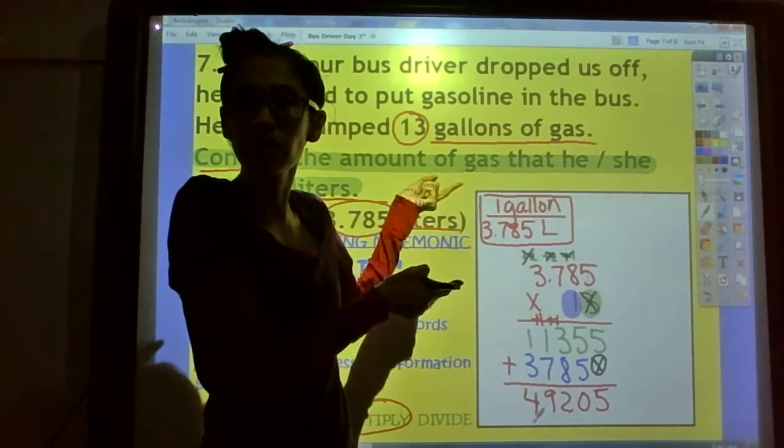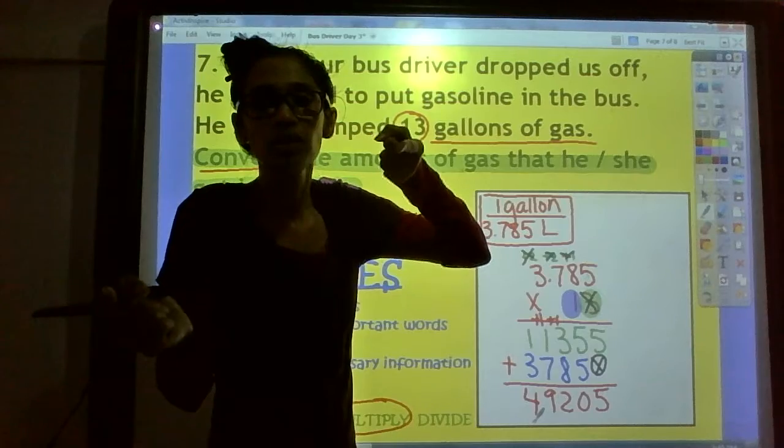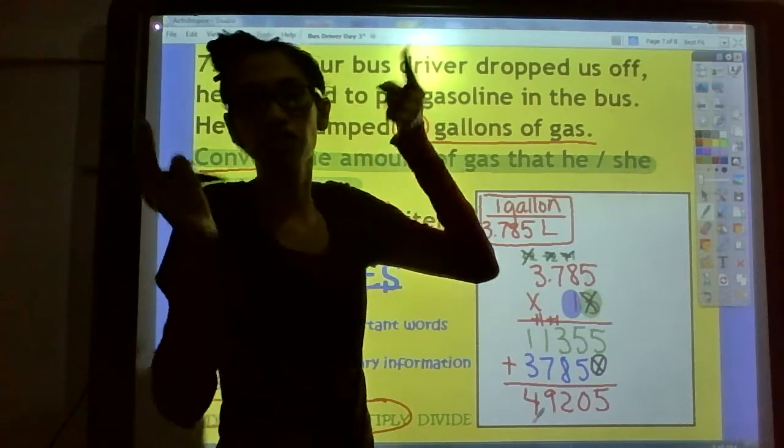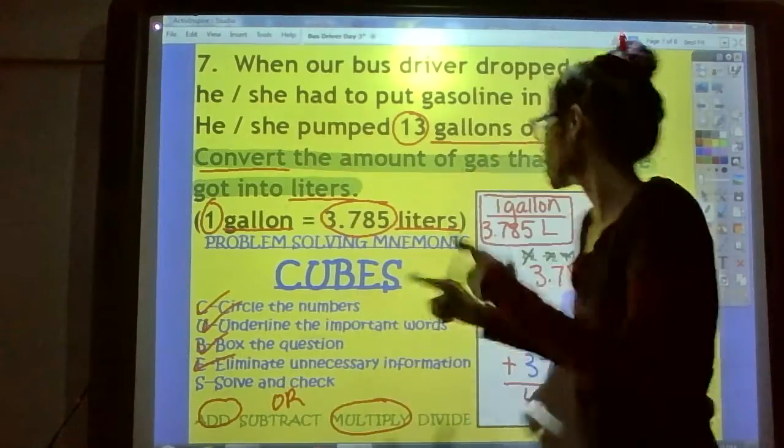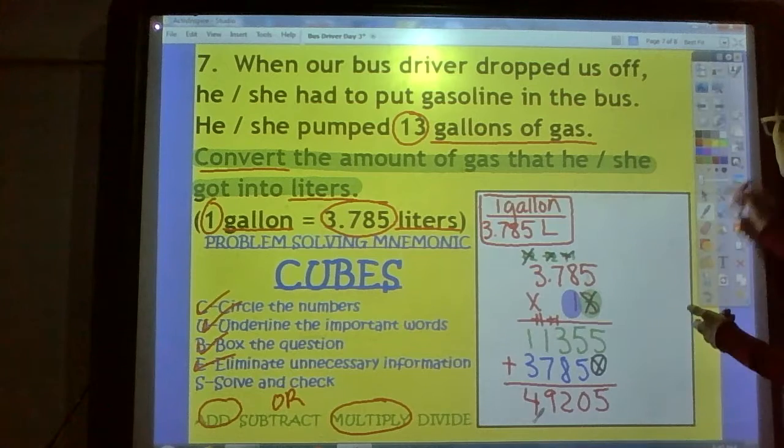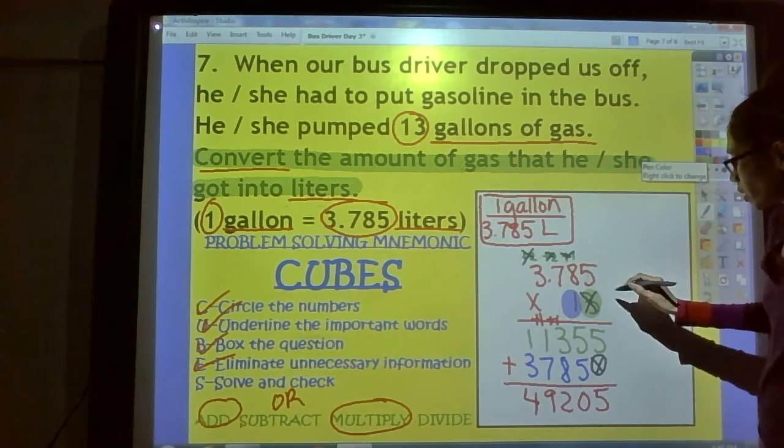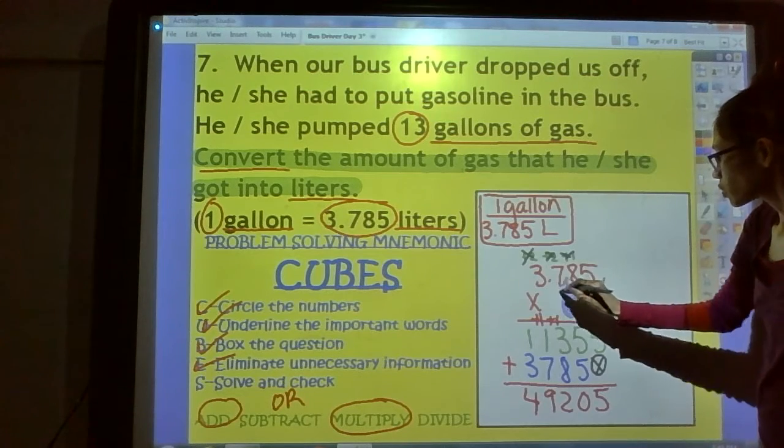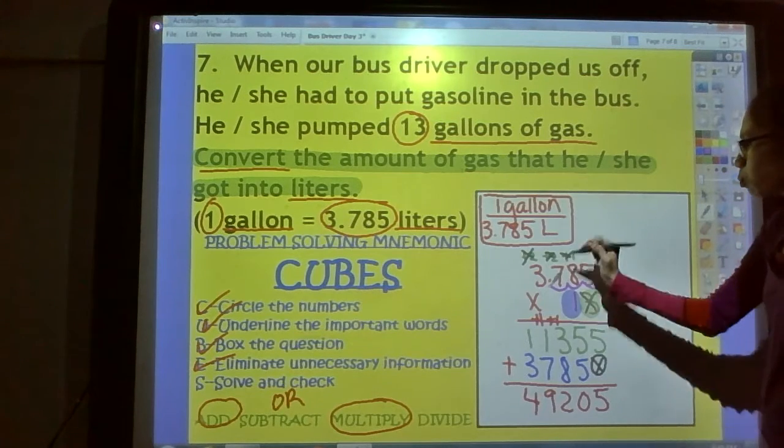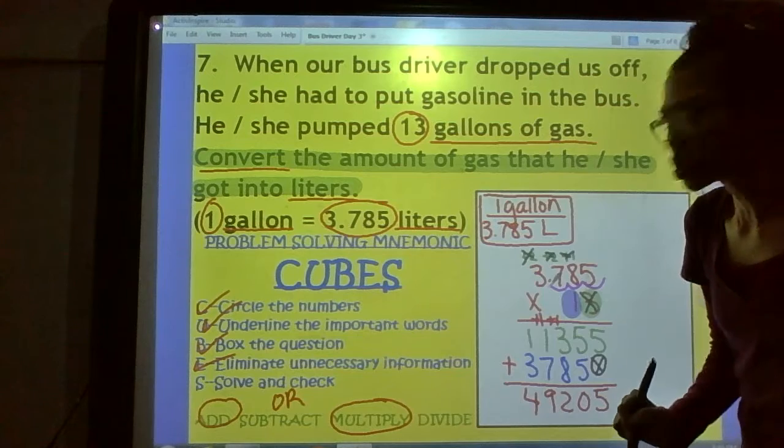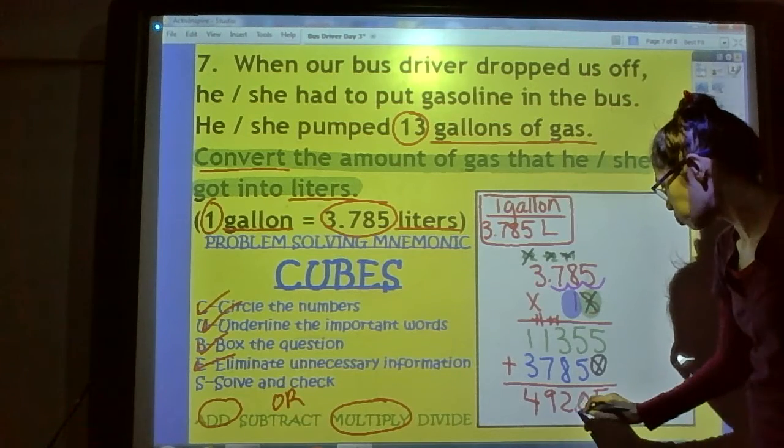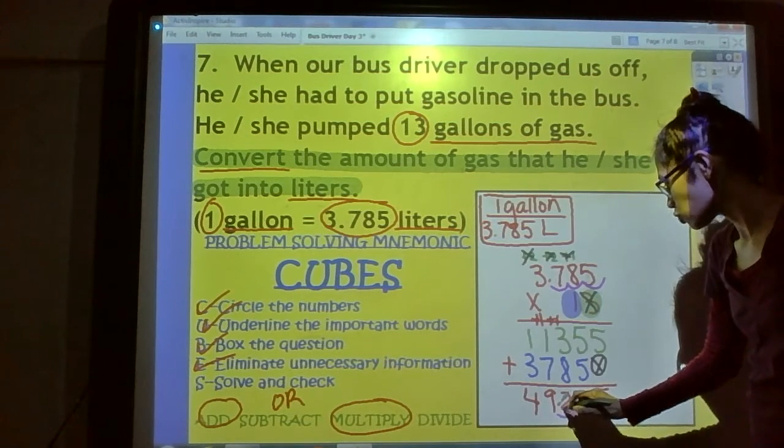No, because what did we forget? The decimal. Oh, you didn't forget that. We just need to do that right now. So look at the problem right here. How many digits do you see behind the decimal? Count it. 1, 2, 3. Bloop, bloop, bloop. So when we go to the answer, we go bloop, bloop, bloop. And the decimal goes right there.